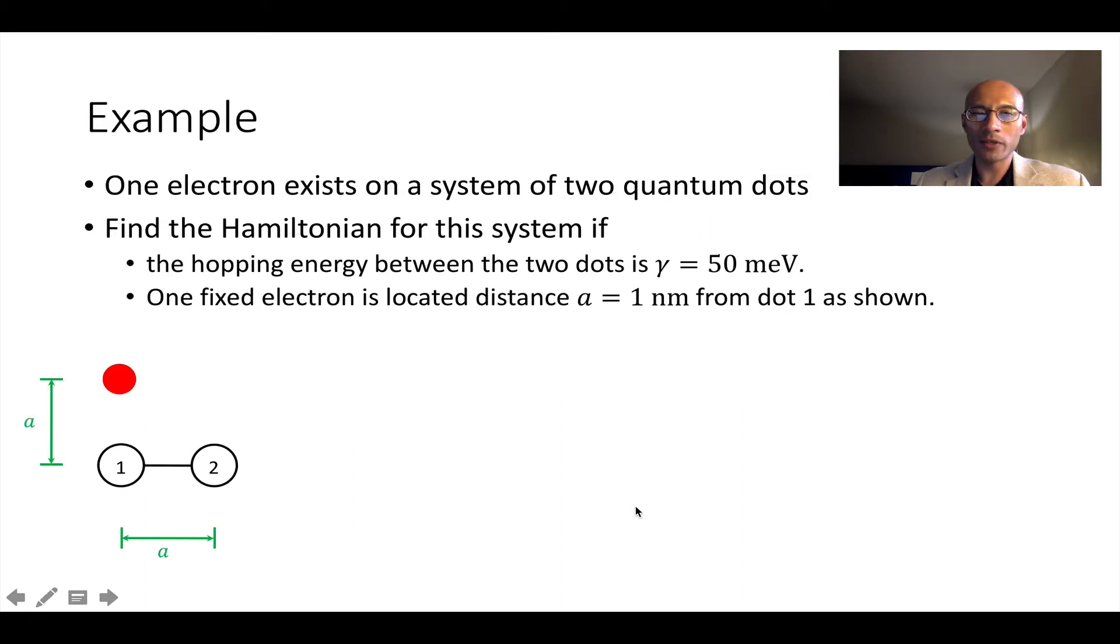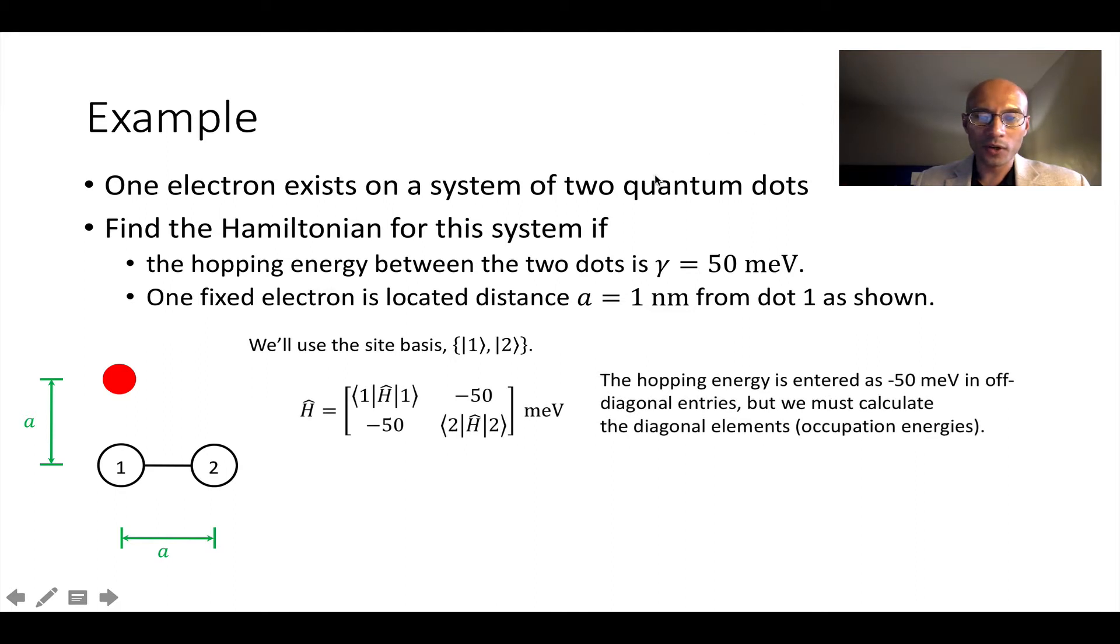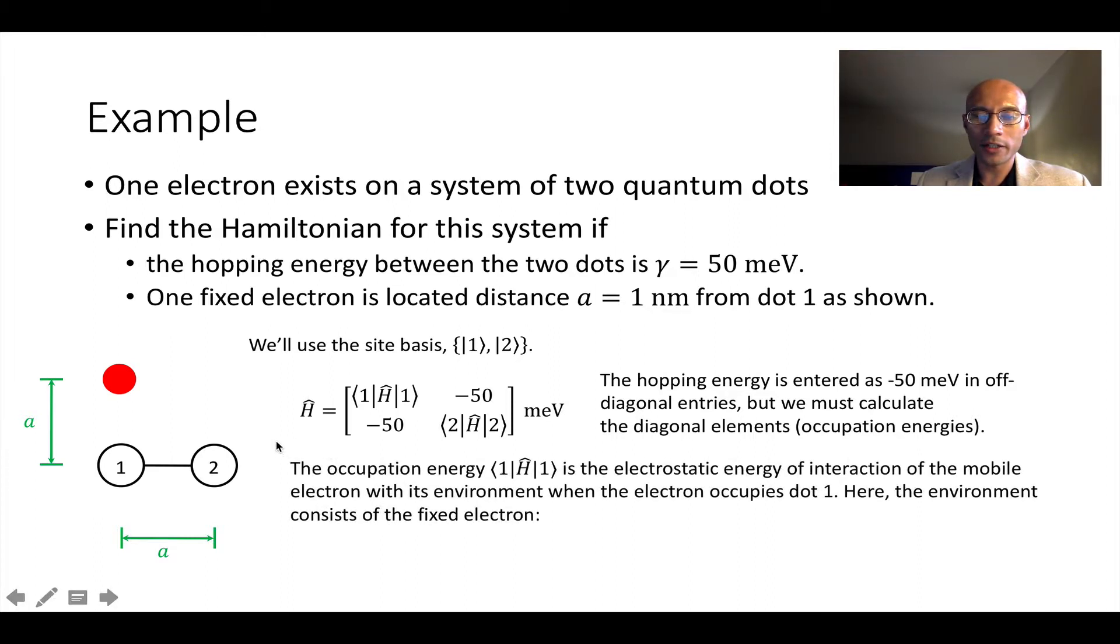Let's calculate the Hamiltonian for this example. So we've got two quantum dots and we're going to have two states, the one state and the two state. It can occupy either. And we have another fixed electron right here. Now the two dots are separated by distance A and then the fixed electron is A above dot one only. So let's calculate the Hamiltonian. So we're going to use the site basis and we're going to use this form. So I specified the hopping energy. And as I said before, we're going to put that in as a negative 50 milli electron volts.